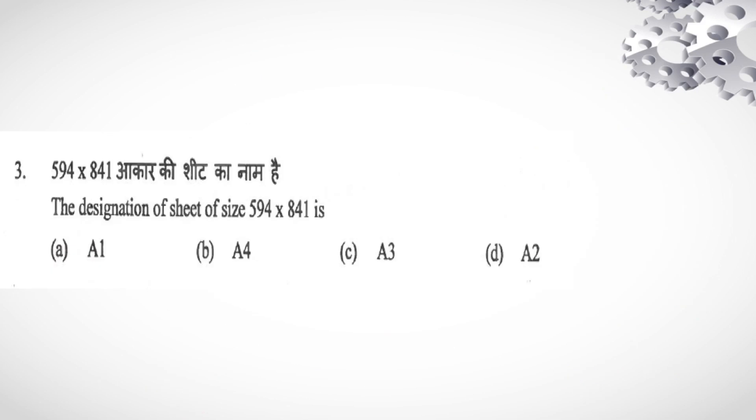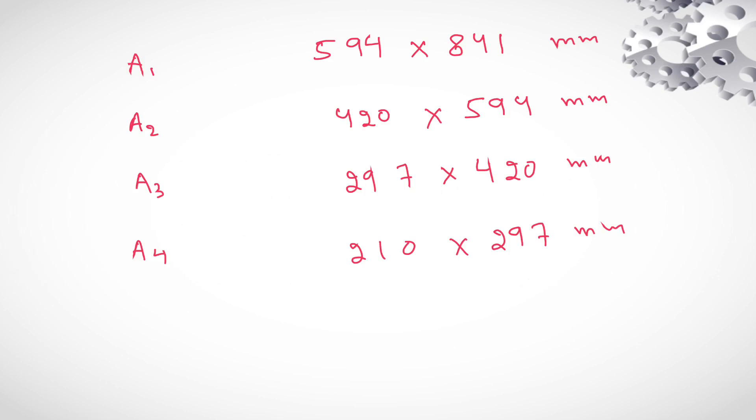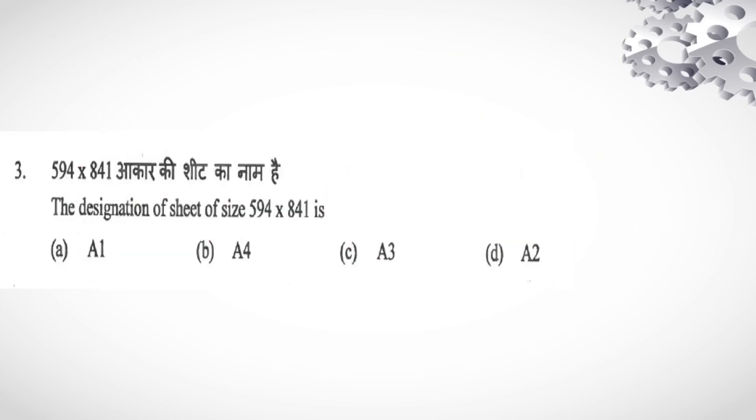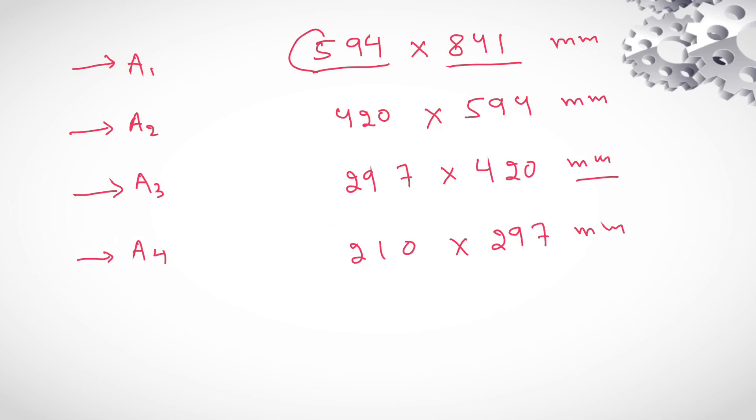The designation of sheet size given: 594 x 841. We know for A1 sheet, its width into height is 594 mm and their height is 841 mm. For A2, it is 420 x 594 mm. For A3 size paper, it is 297 x 420. Unit is mm. And for A4 size paper, it is 210 x 297 mm. So here in this question, they ask for 594 x 841 mm. A1 size paper. This question is from engineering drawing.